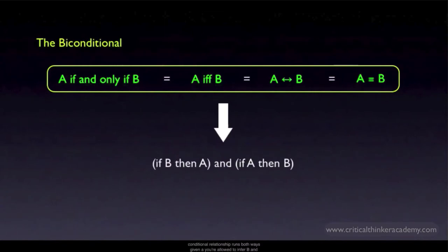Given A, you're allowed to infer B and given B, you're allowed to infer A. It's not surprising then that this is also called a biconditional. You might encounter the biconditional written in different ways, but they all mean the same thing: that A implies B and B implies A.